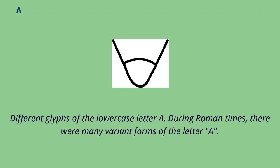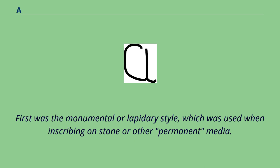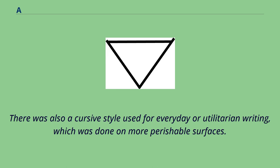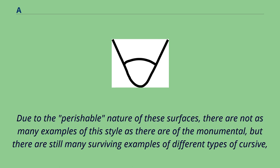During Roman times, there were many variant forms of the letter A. First was the monumental or lapidary style, which was used when inscribing on stone or other permanent media. There was also a cursive style used for everyday or utilitarian writing, which was done on more perishable surfaces. Due to the perishable nature of these surfaces, there are not as many examples of this style as there are of the monumental, but there are still many surviving examples of different types of cursive.